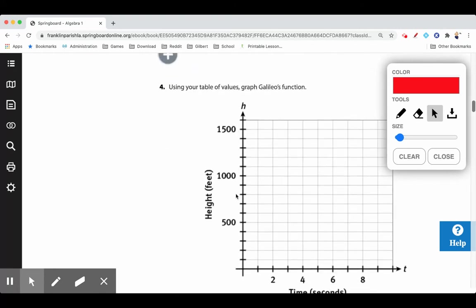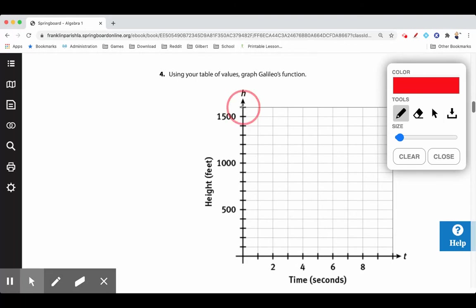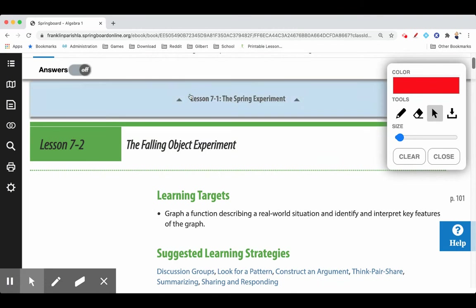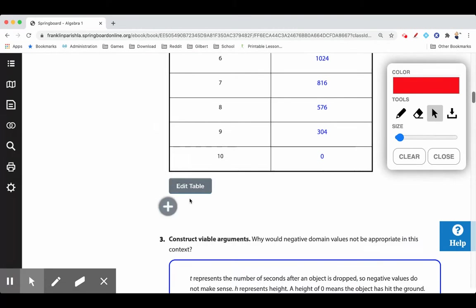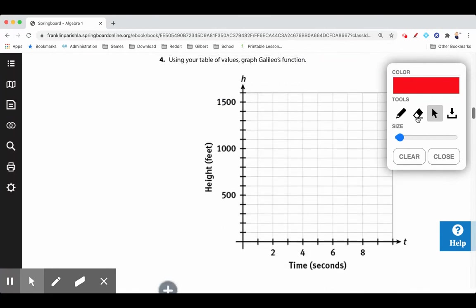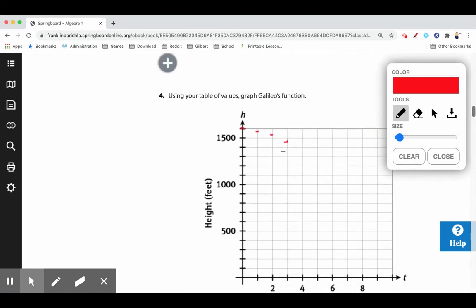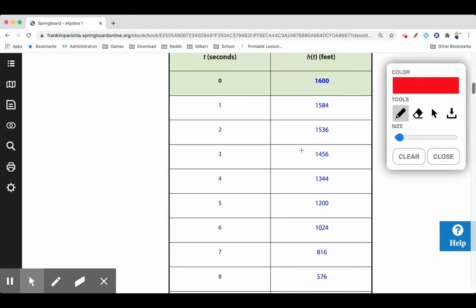Now use those tables of values that you've got and we're going to graph this function. We're going to say like a point here at zero, sixteen hundred, and then one, fifteen eighty-four, and then two, fifteen thirty-six. We're just going to graph the points. Where is it? And then it would have been like fourteen... I didn't save the numbers. I want to say it... fourteen fifty-six. So it was sixteen hundred, fifteen eighty-four, fifteen thirty-six, fourteen fifty-six—so about right there.